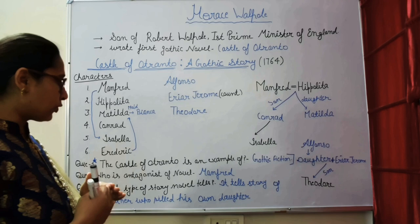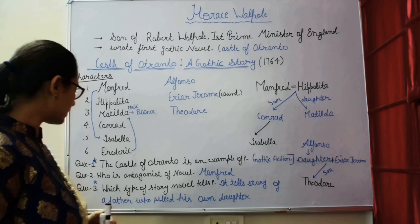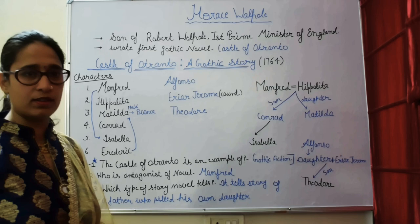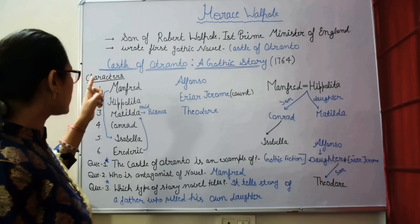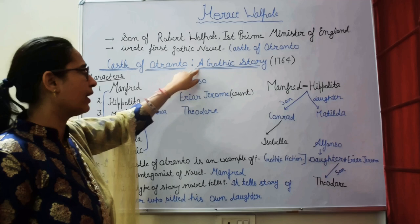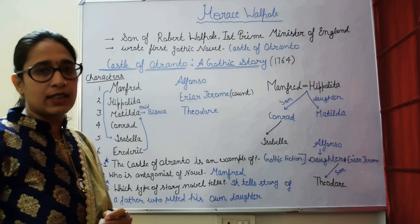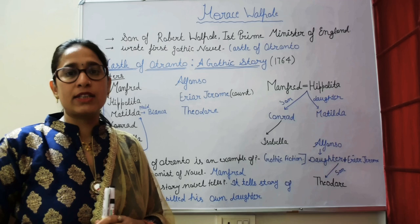In net exam questions, this answer matches: it tells the story of a father who killed his own daughter. Another question that has appeared in exams: what is the subtitle of Castle of Otranto? The subtitle is 'A Gothic Story.' With this, today's discussion of Horace Walpole's Castle of Otranto is finished. In the next video we will look at Ann Radcliffe and her Gothic novel The Mysteries of Udolpho.